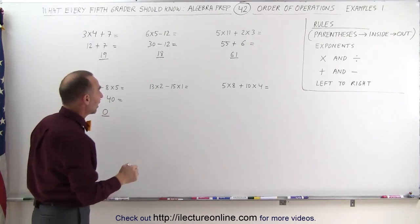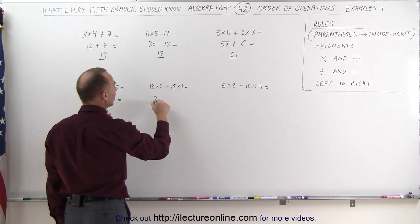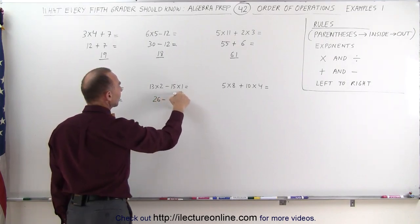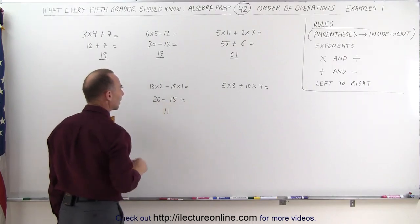Our next problem, it's the same. We have 2 multiplications and a subtraction in the middle. We do the multiplications first. 13 times 2, 26, minus 15 times 1, which is 15. 26 minus 15, that's equal to 11.